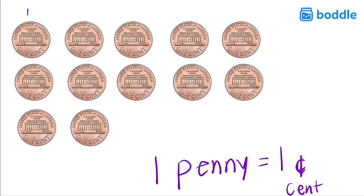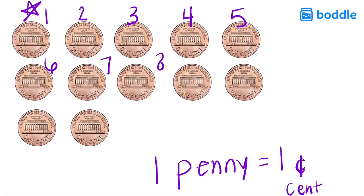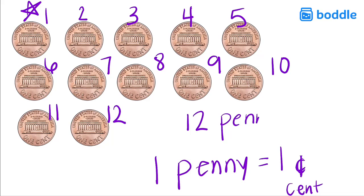Starting where my star is right on top, I have 1, 2, 3, 4, 5, 6, 7, 8, 9, 10, 11, 12. How many pennies do we have? 12 pennies.